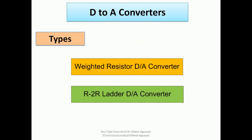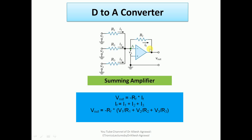In this lecture we will discuss two different kinds of converters: one is the weighted resistor digital to analog converter, and the second is the R2R ladder digital to analog converter. Before discussing them in detail, we will first discuss the concept of the summing amplifier. Here you can see we have an operational amplifier with an inverting (negative) terminal and a non-inverting (positive) terminal.